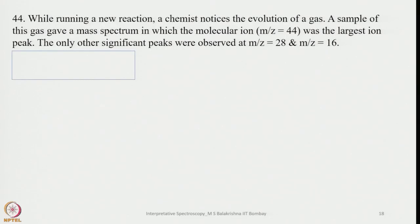There is a problem. While running a new reaction, a chemist notices the evolution of a gas. A sample of this gas gave a mass spectrum in which the molecular ion M/Z equals 44 was the largest ion peak. The only other significant peaks were observed at M/Z equals 28 and M/Z equals 16. For curiosity, it is very easy to predict the gas. The moment gas means probably we will be thinking of CO, CO2, N2 or ethylene.